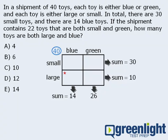To fill in each box, we need one more piece of information, and that piece of information is right here. 22 of the toys are both small and green. Since this box is reserved for small green toys, we know that 22 toys go in this box. From here, we can fill in the rest of the diagram.